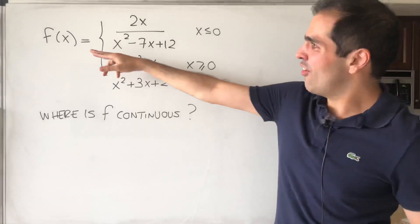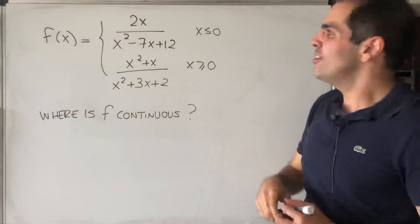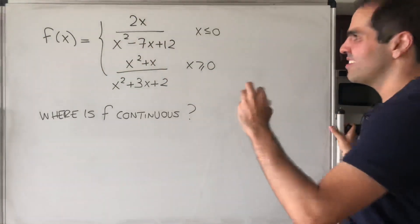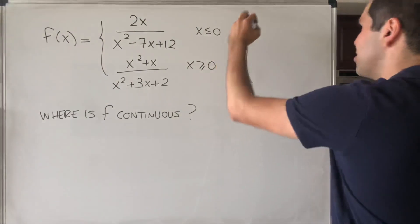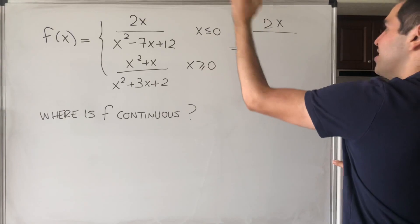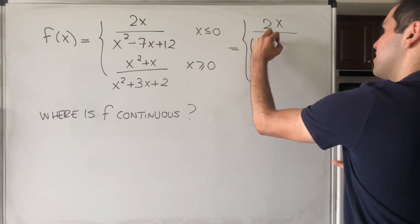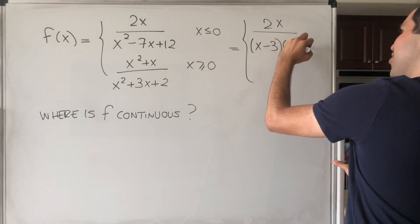In particular, consider the following function f of x, which is 2x over x squared minus 7x plus 12 when x is less or equal to 0, which by the way you can write as 2x times x minus 3 times x minus 4.